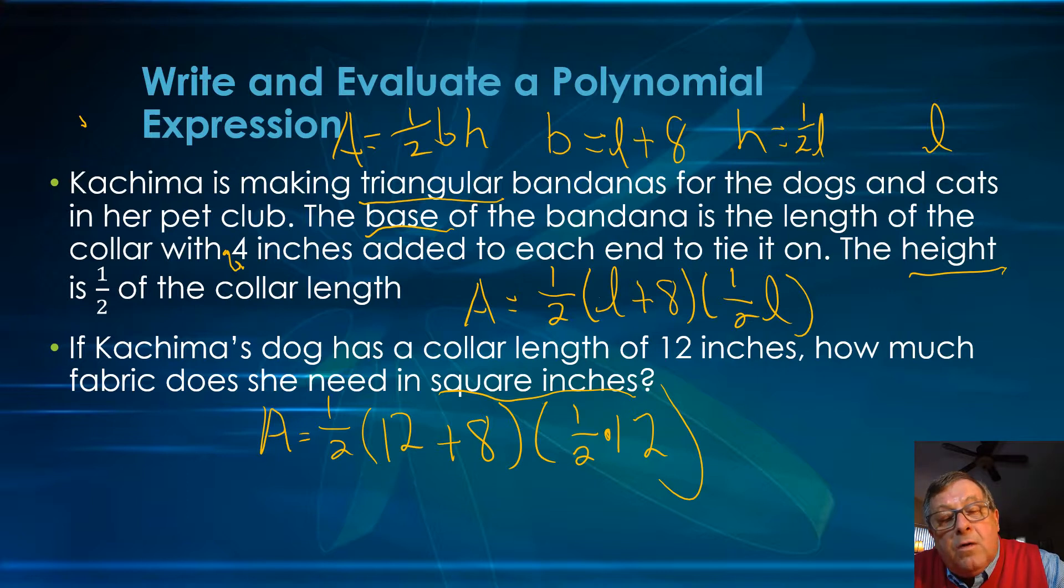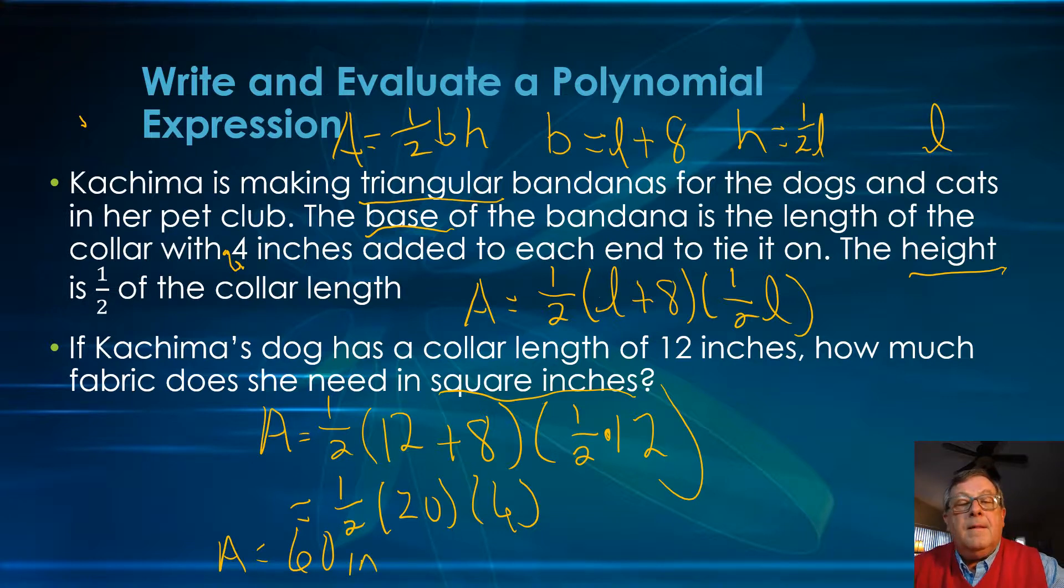Now we're ready to solve this. We got one half, 12 plus 8 is 20, one half times 20, and one half times 12 is 6. So we got one half times 20 times 6, and so our area is going to equal, one half times 20 is 10, and 10 times 6 is 60. We got 60 square inches for how much fabric we need for this bandana for this particular dog.